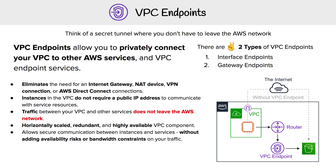Here's a use case to make it crystal clear. Imagine you have an EC2 instance and you want to get something from your S3 bucket. What you normally do is use the AWS SDK, and that call would go out of your internet gateway to the internet, back into the AWS network, to get that file or object out of S3.